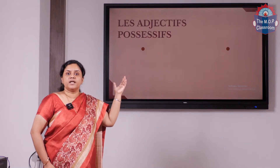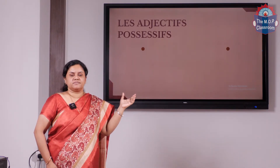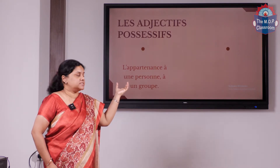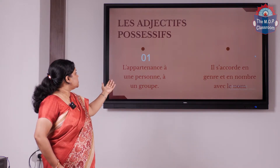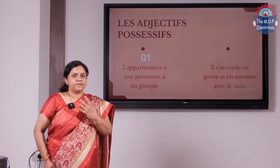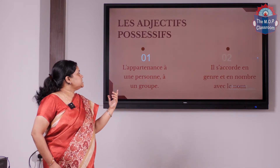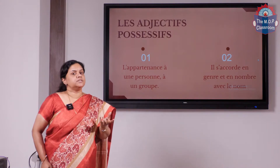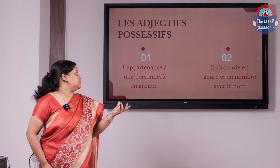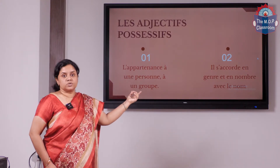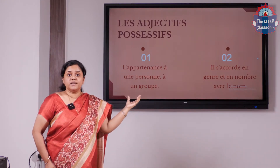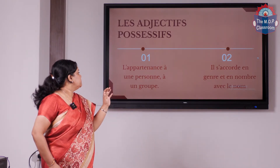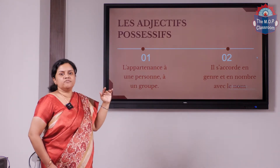Now, adjectif possessif — let us learn about the possessive adjective. We saw what an adjective is and you know what possession is. Now let us see the rules of possessive adjectives. The first rule is: it shows belonging to someone. The second rule is: il s'accorde en genre et en nombre avec le nom — it agrees in gender and number with the noun, just as we saw with adjectives. These two rules are key, and the second one is what we do not find in English — it should agree in gender and number.